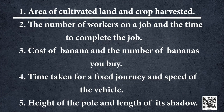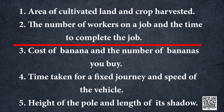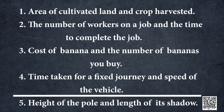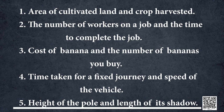Now, can you tell me which of the following are in direct proportion? Area of cultivated land and crop harvested. The number of workers on a job and the time taken to complete the job. Cost of banana and the number of bananas you buy. Time taken for a fixed journey and speed of the vehicle. Height of the pole and the length of its shadow.